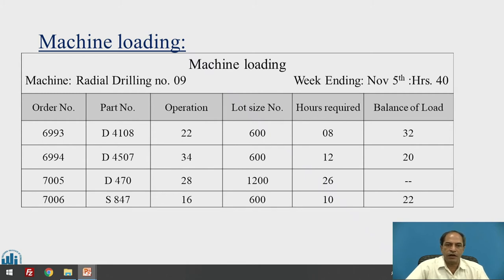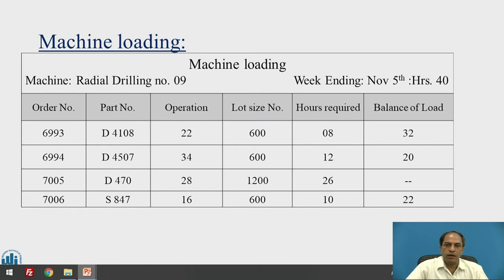Here is a simple example of machine loading on a conventional drilling machine — specifically a radial drilling machine number 9. For the week ending November 5th, the total hours available for that machine are 40 hours, based on a five-day week at eight hours per day. The load chart lists order numbers, part numbers, operation numbers, quantity to manufacture, total hours required, and balance load for each order. This tabulated information gives the entire loading pattern order-wise and machine-hours-wise.